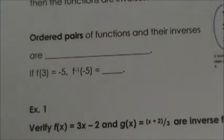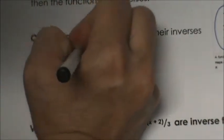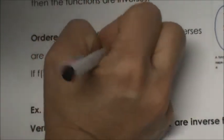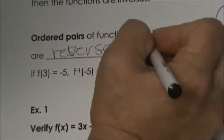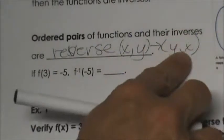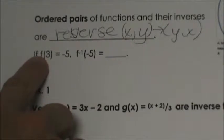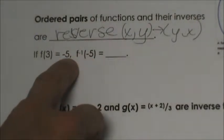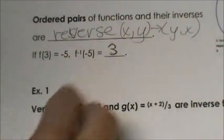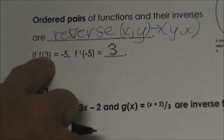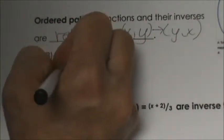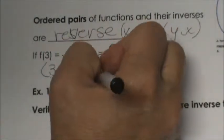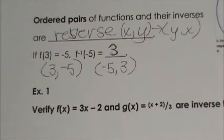Now, ordered pairs. Ordered pairs of functions and their inverses are actually just reversing positions — we reverse positions of the x and y coordinates. So an (x, y) becomes a (y, x) in the inverse function. For example, if f(3) equals negative 5, then the inverse of negative 5 must output 3, because they switch positions. So the ordered pair would be (negative 5, positive 3).